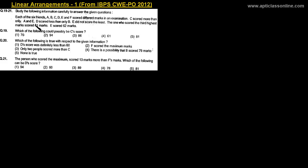Three questions are based on this information. We have to represent whatever information is given in these three lines in a way that helps us answer the questions. We need to arrange six friends in increasing or decreasing order of marks. So we mark positions one through six from lower to higher, and we will write the names at each of the six points.